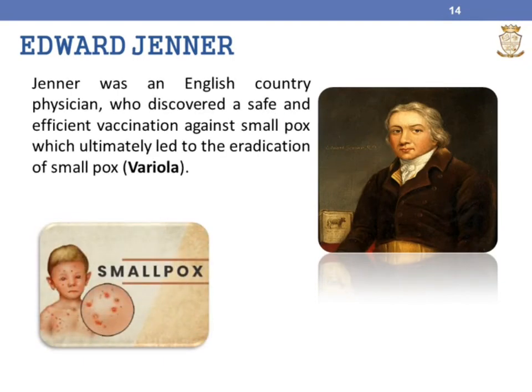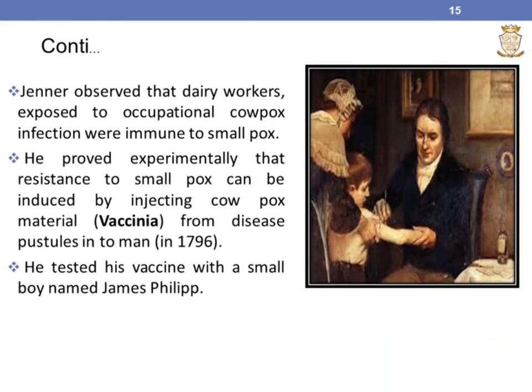The contributions of Edward Jenner are significant in the field of microbiology and also a breakthrough in the field of medicine. Jenner was an English country physician who discovered a safe and efficient vaccination against smallpox, which ultimately led to the eradication of smallpox. Jenner observed that dairy workers exposed to occupational cowpox infection were immune to smallpox. He proved experimentally that resistance to smallpox can be induced by injecting cowpox material, vaccinia, from disease pustules into man.